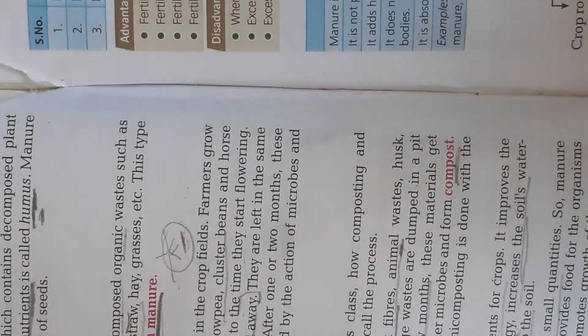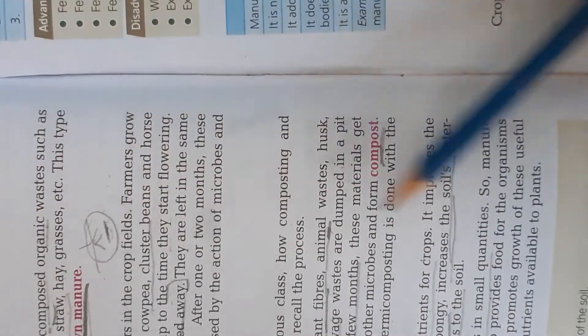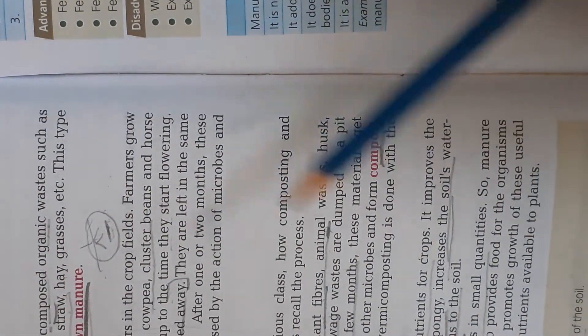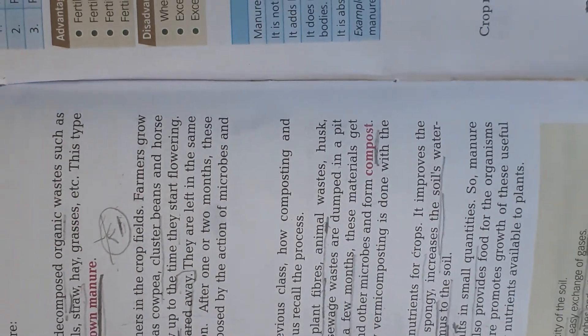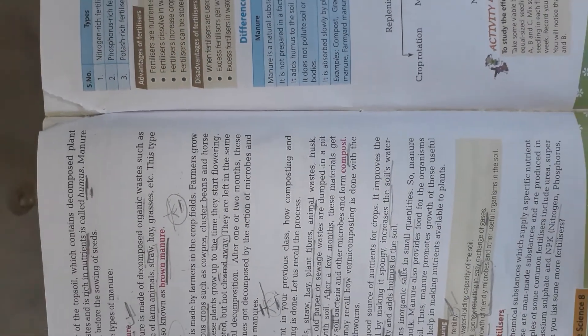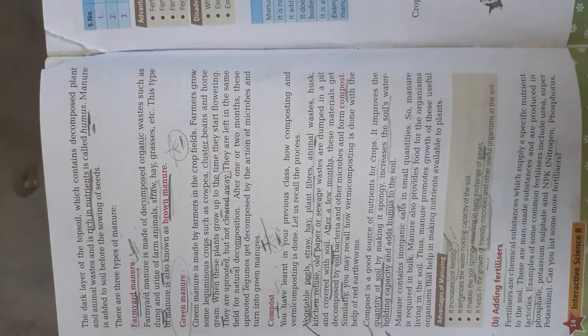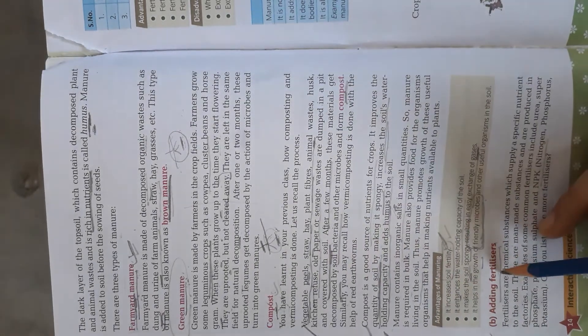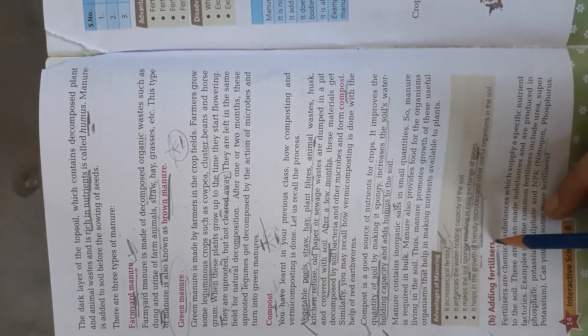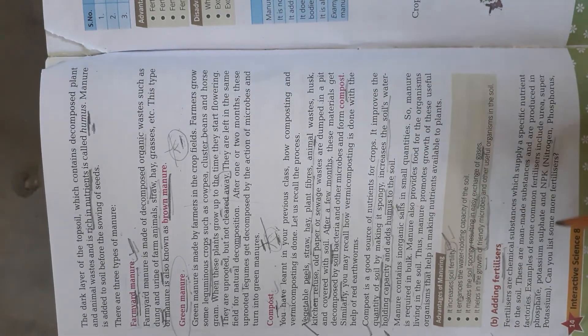Next, our topic is adding fertilizer. Manure is organic, naturally obtained, it has no side effects. Next is adding fertilizer. Fertilizer is not naturally obtained. Fertilizers are manmade, prepared in the factory.